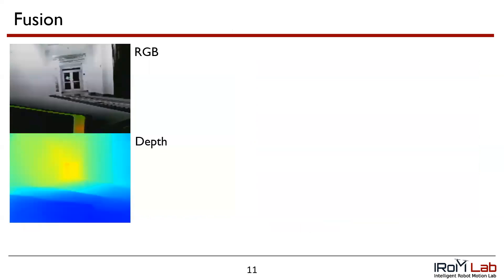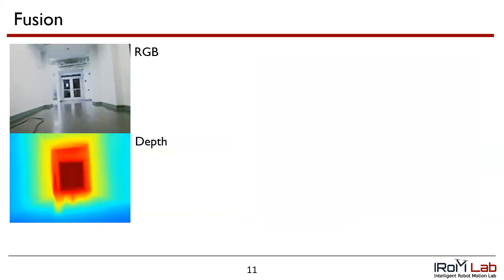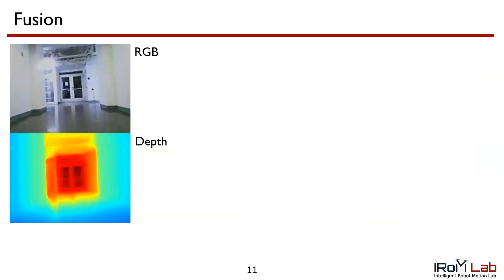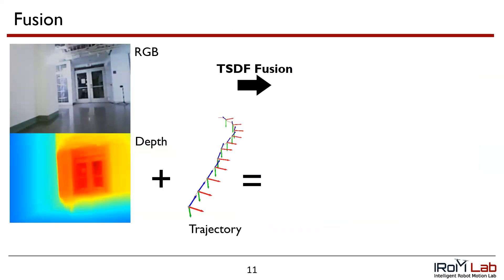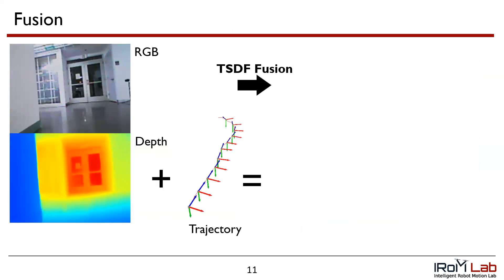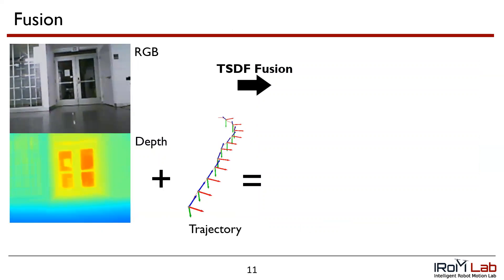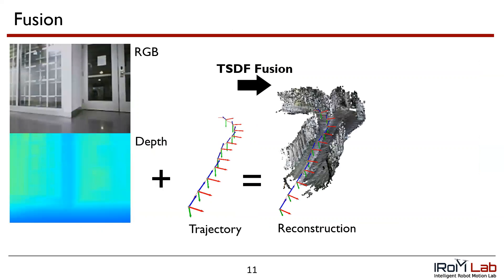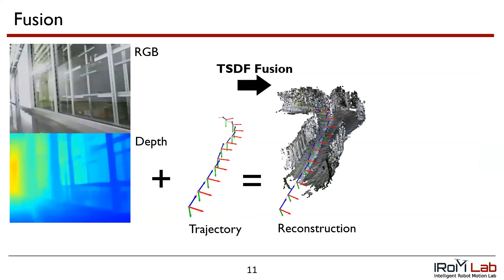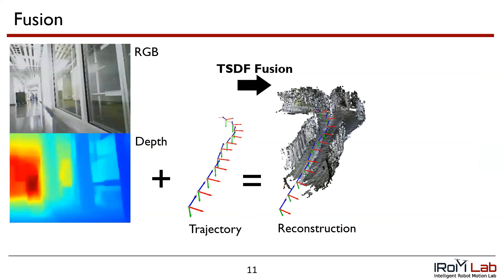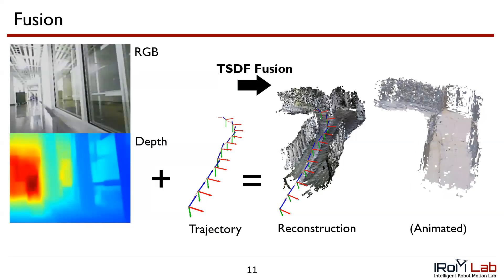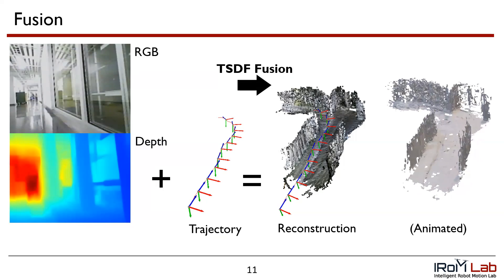As the MAV flies, it collects a series of RGB images which are converted into depths. These images, along with the camera's trajectory, are fused together using Open3D's TSDF integration algorithm. The reconstruction is a weighted combination of the depth images from different perspectives. The fusion pipeline helps correct per-frame errors in depth estimation by integrating the pose, and also provides a memory of previously seen positions of the environment, which is essential due to the camera's reduced field of view. Here is a reconstruction example in a hallway environment.